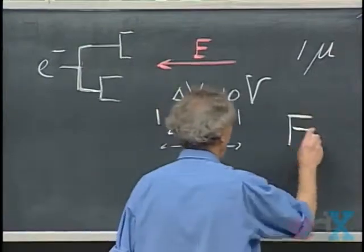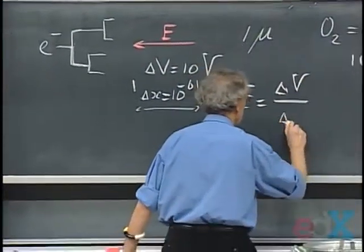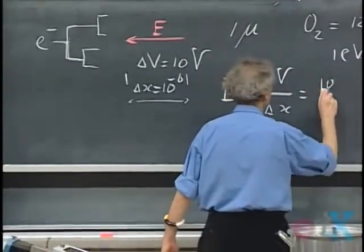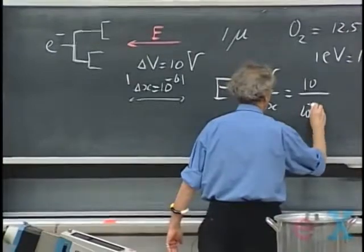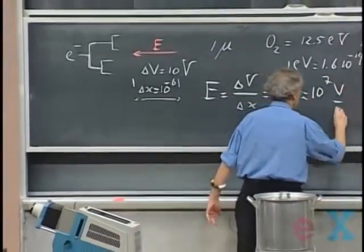So what electric field is required for that? That is ΔV, the potential difference, divided by the Δx. So that is 10 divided by 10^-6. So that's about 10^7 volts per meter. That's a very strong electric field.